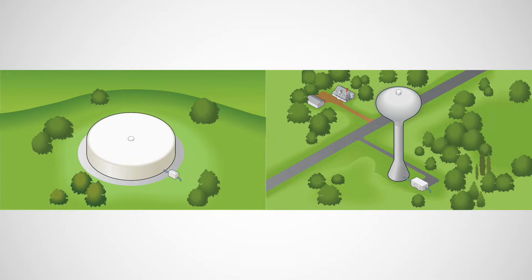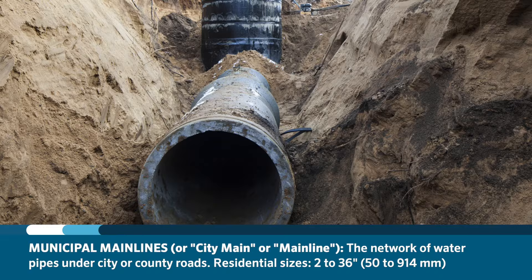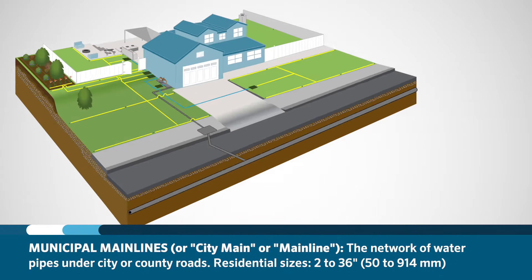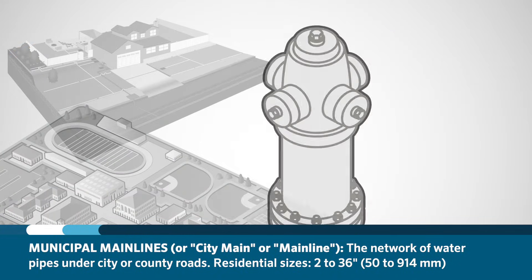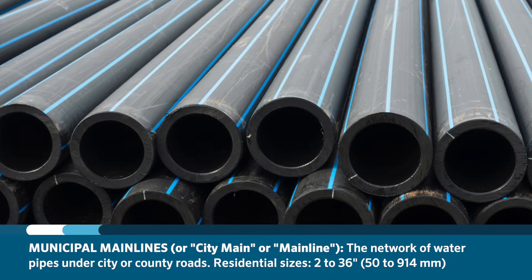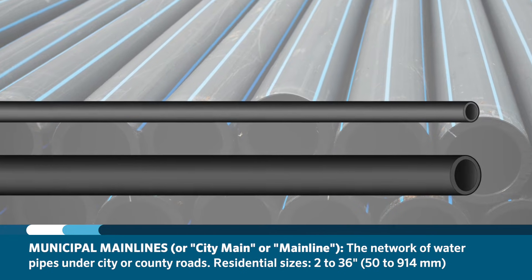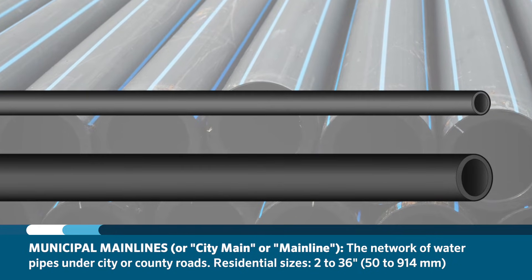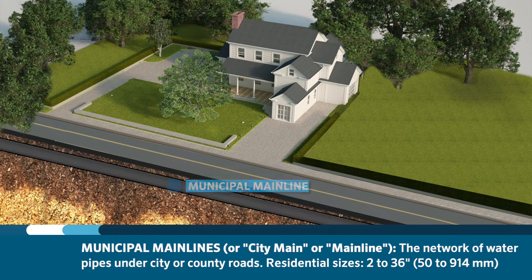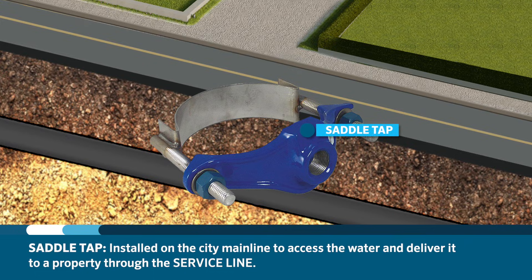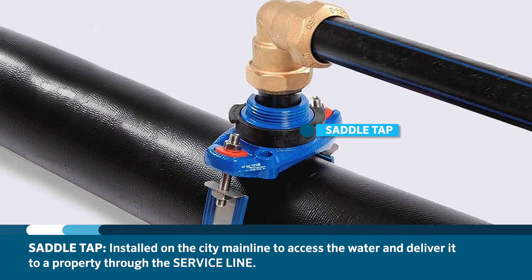These are maintained by the supplying agency. The network of pipes deep under the city or county roads services homes, commercial properties, and fire hydrants. These pipes are usually very large and typically range from about 2 to 36 inches. These are called municipal mainlines, and may often be referred to as city main or mainline. A saddle tap is installed on the city mainline to access the water and deliver it to a property through the service line.